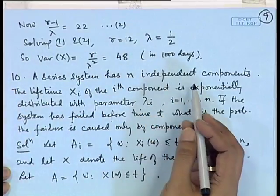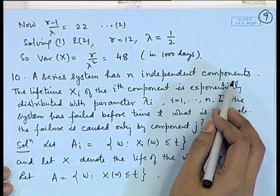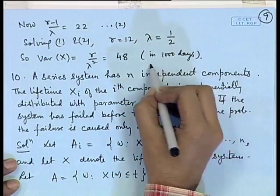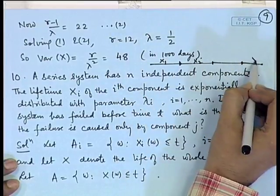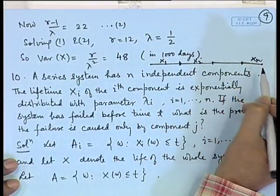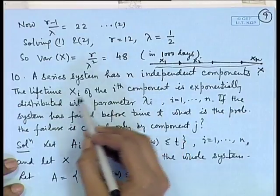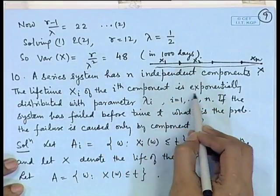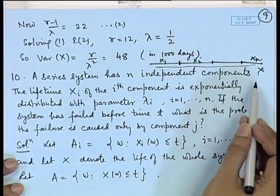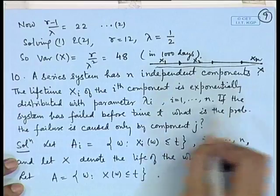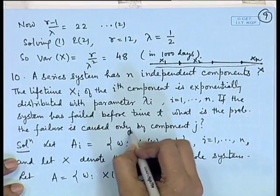Let us consider a series system. A series system has n independent components in series. The lifetime of the components are x1, x2, ..., xn. Suppose the total life of the system is x, and the individual lifetimes are assumed to be exponentially distributed with parameters lambda_1, lambda_2, ..., lambda_n. If the system has failed before time t, what is the probability that the failure is caused only by component j?